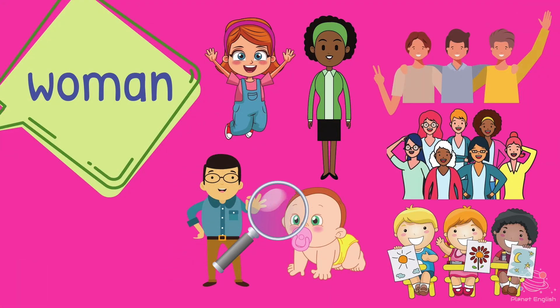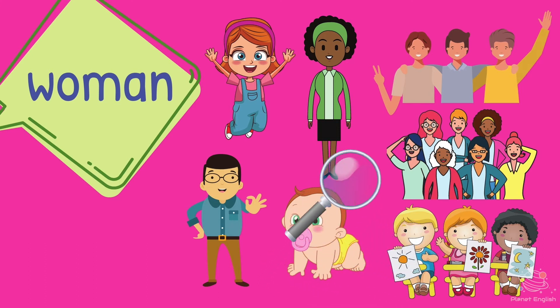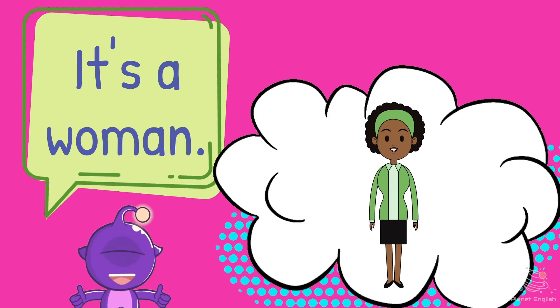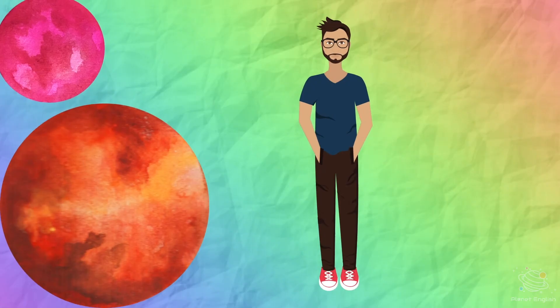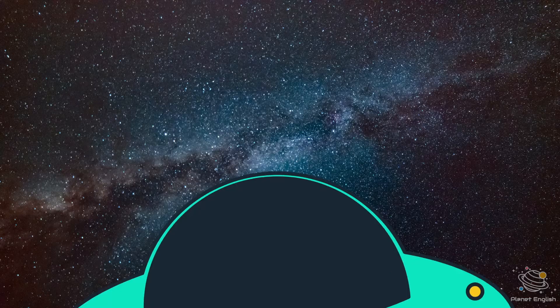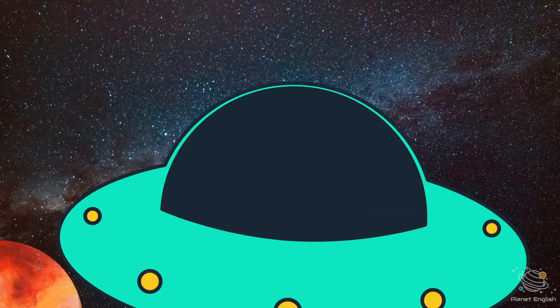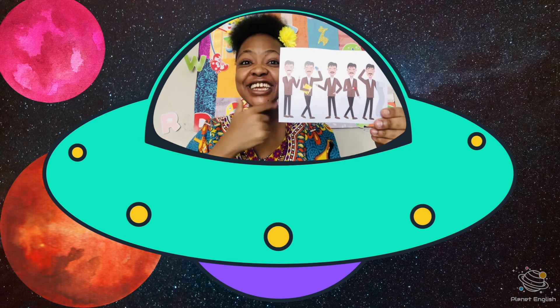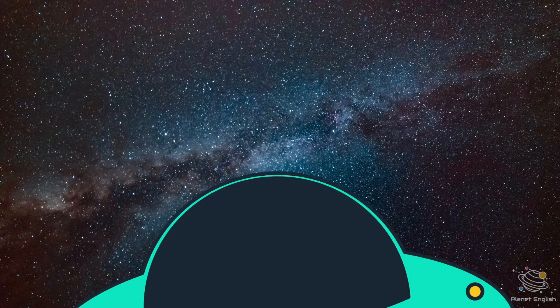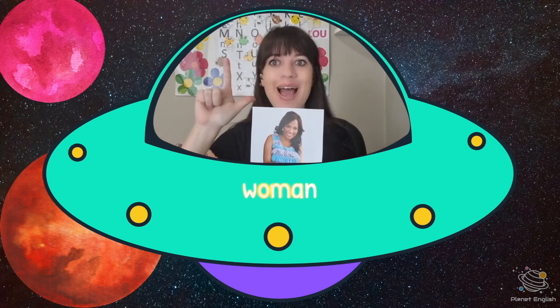Where is this word? It's a woman. What is it? Man. It's a man. Who are they? Men. They are men. What is it? Woman. It's a woman.